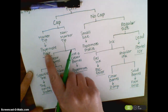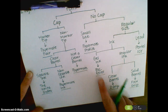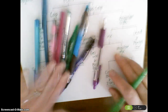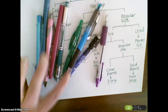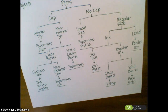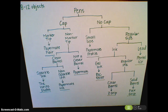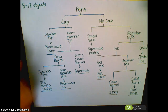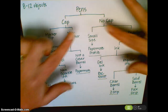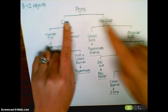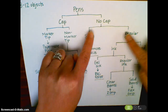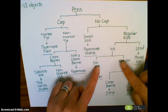Counting all the arrows: one, two, three, four, five, six, seven, eight, nine pens. Double check — nine pens. I know I've done that correctly. So your only goal for tonight is to take between 8 and 12 objects from home and create your dichotomous key similar to the one I've done. Notice there's always two choices everywhere you look on your dichotomous key — always two choices.